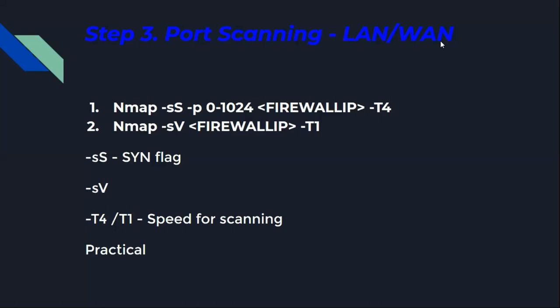Step three is port scanning. The most commonly used tool is Nmap. In this step, we not only identify open ports on the firewall but also identify the corresponding services running on those ports. For example: nmap -sS -p 0-1024 [firewall IP] -T4, using the SYN flag, port range, and scan speed.